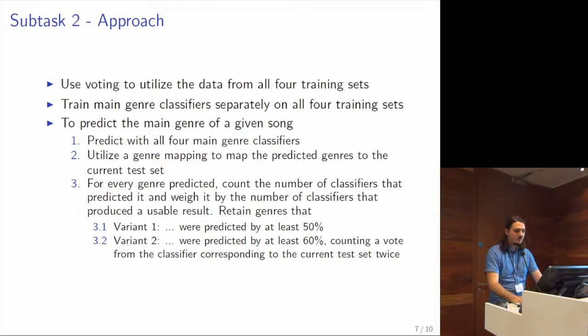That allows us to basically ignore some of the orthographic differences, like for example hip-hop being written with a space in between or not. But it doesn't really give us much matching. Then we simply counted the number of classifiers that predicted a given genre, divided that by the number of classifiers that produced at least one label that was mappable. All classifiers that produced nothing we could use for a given song were discarded.